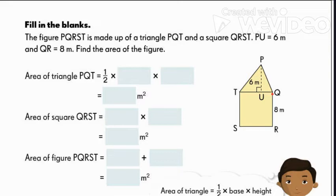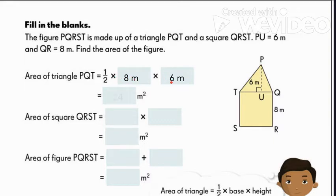So the base is actually TQ. Looking at this figure closely, we can find out that the base is actually one side of the square. So if this side of the square is equal to 8 meters, then it follows that the base of the triangle has the same length. So the base is equal to 8 meters and the given height is 6 meters. So if we multiply 1/2 times 8 times 6, this will give us 24 square meters.